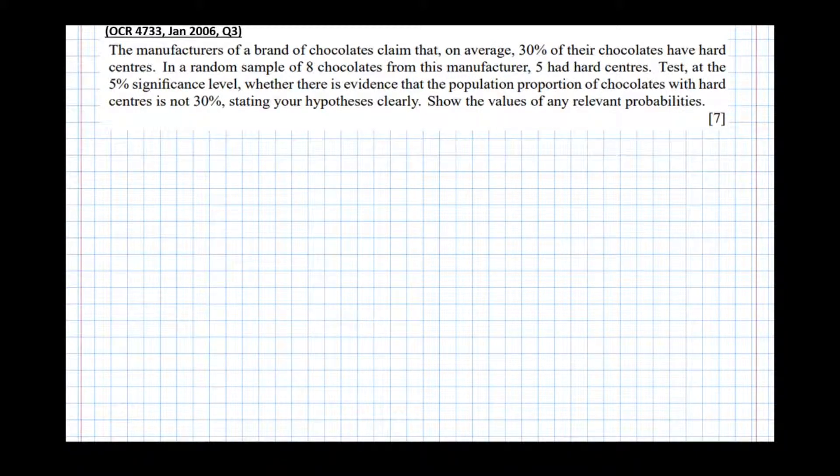In this video we're going to have a look at two-tail binomial hypothesis tests. Now I've already done two videos on binomial hypothesis tests for left-hand tail and for right-hand tail, so this one I'm going to go into a little bit less detail. I'm assuming you've watched those other two videos—if you haven't, please go and watch them—but this particular one is just going to focus on how to get the marks in the quickest way possible in an exam.